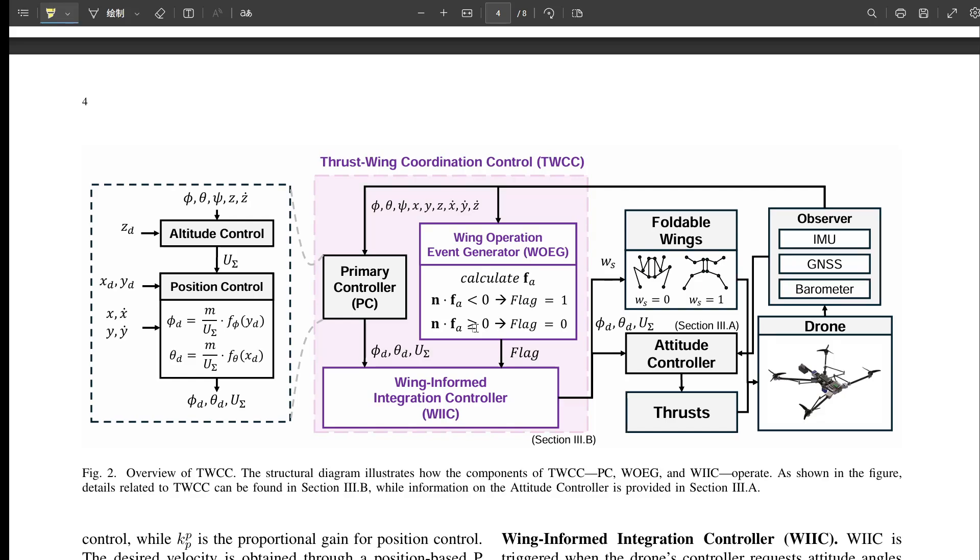So it's checking if the wing force would push in the right direction. Precisely. If the WOEG calculates that wing deployment would be beneficial, maybe help turn faster or slow down, it raises a flag, like saying, hey, wings could be useful here. Got it. So the WOEG identifies the opportunity. What triggers the actual wing use? That's the WIIC, the Wing-Informed Integration Controller.